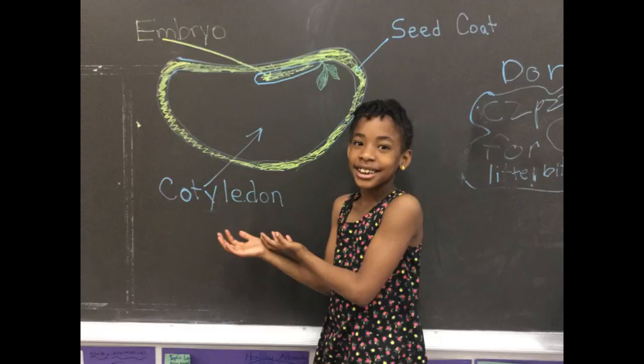Cotyledon. The cotyledon is the second part of the seed. The cotyledon is the part that feeds the embryo.